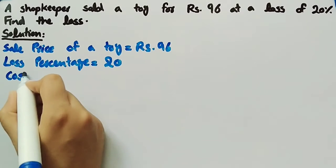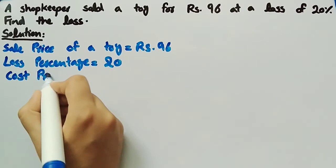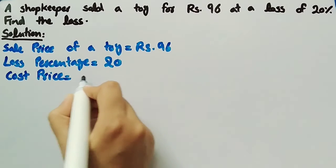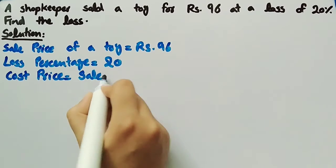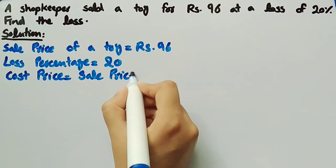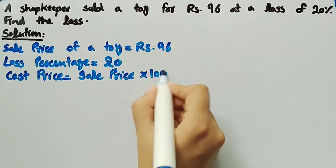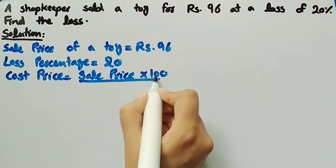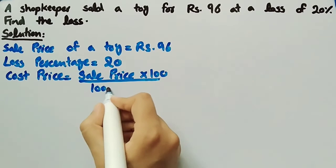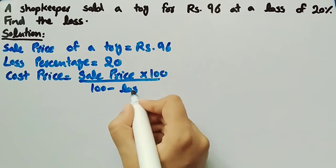The formula for cost price is: cost price equal to sale price multiplied by 100 divided by 100 minus loss percentage.